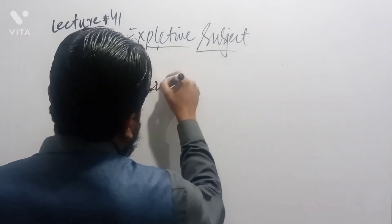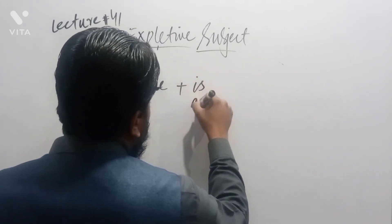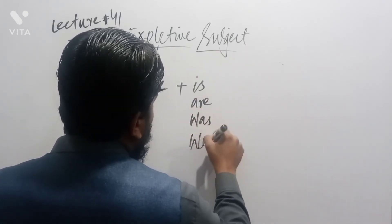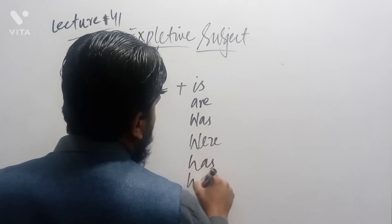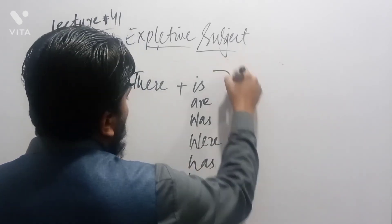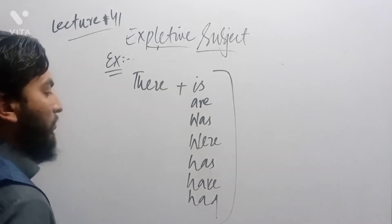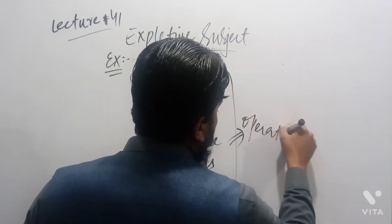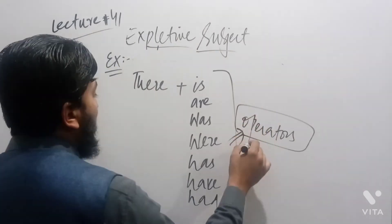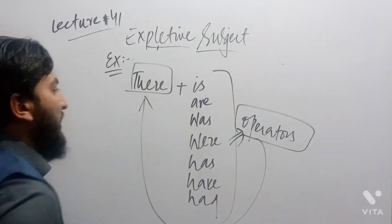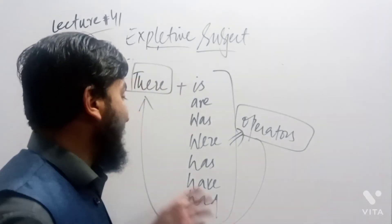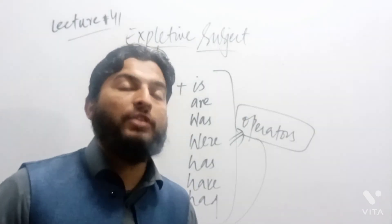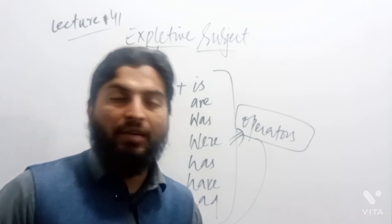With the use of 'there', we can use the operators: is, are, was, were, has, have, had. All these different operators are used after 'there'. Therefore, 'there' in fact does not take any part in the sentence itself — existence is shown with the help of these operator words. That is why 'there' is used as an expletive subject in the types of subjects.